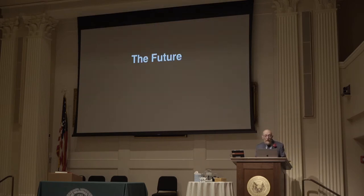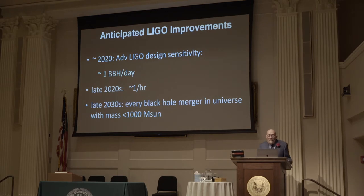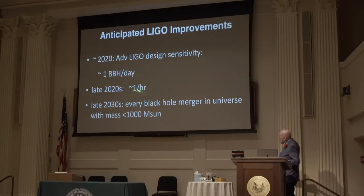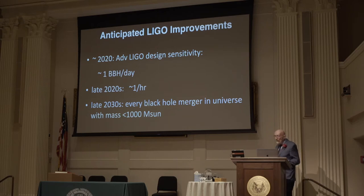Talking about the future, we anticipate major improvements in LIGO and Virgo sensitivity over the coming few years. By 2020 we should be at our design sensitivity, and the event rate for black hole collisions should be roughly one a day — it's now roughly one a month. In the late 2020s, we should be at about one per hour. By the late 2030s, we expect we'll see every black hole merger in the universe with masses below about 1,000 solar masses. Just as electromagnetic astronomy, radio astronomy, X-ray astronomy, and infrared astronomy have all blossomed, we anticipate the same with gravitational wave observations.